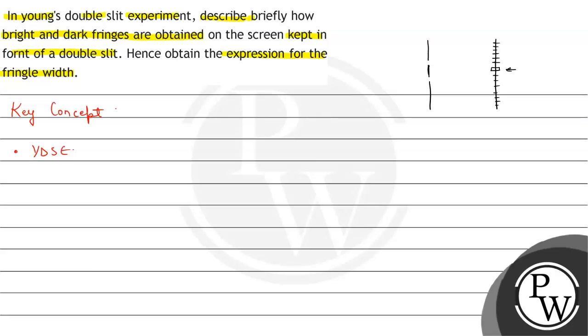Why do we obtain this pattern? That is the main thing the question is asking — describe briefly how bright and dark fringes are obtained. Between these bright fringes there are dark fringes.